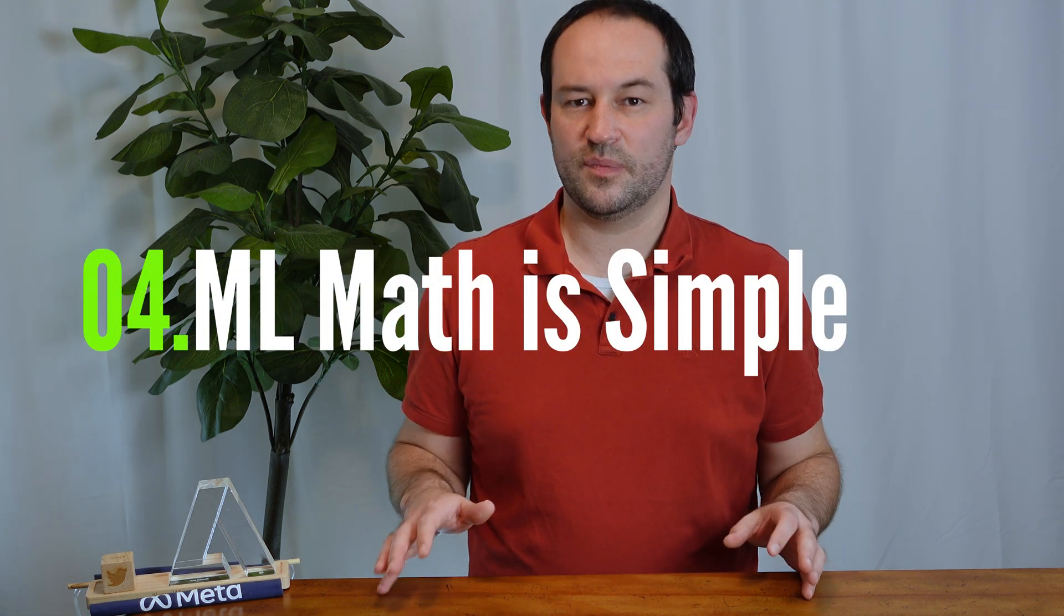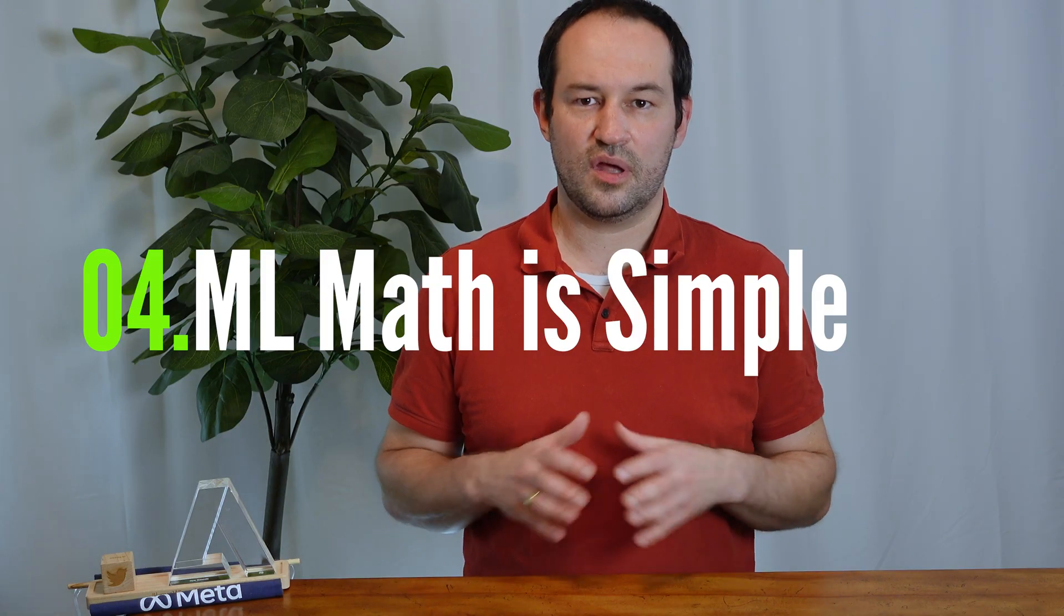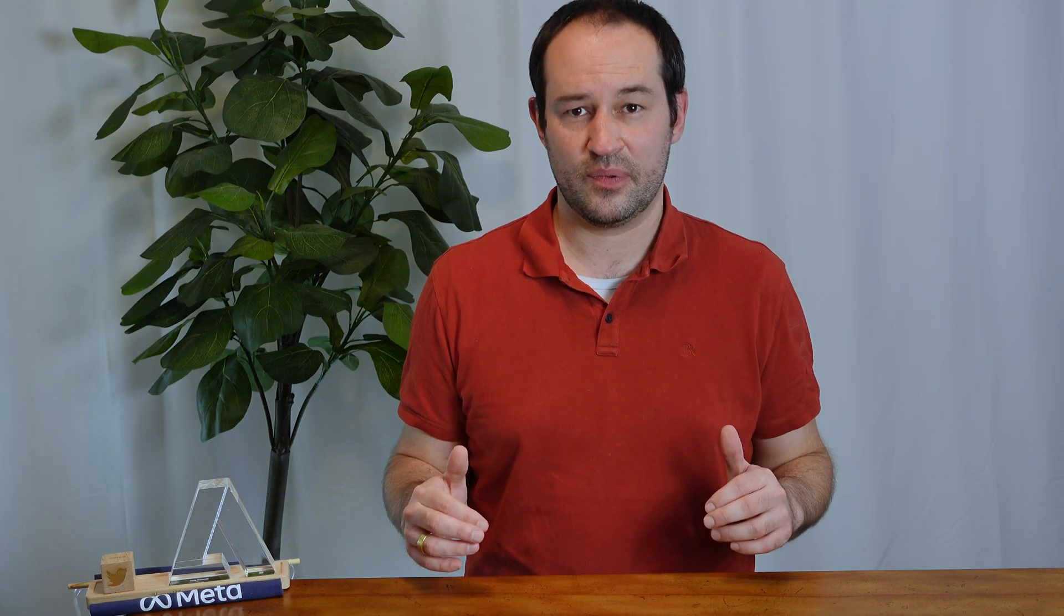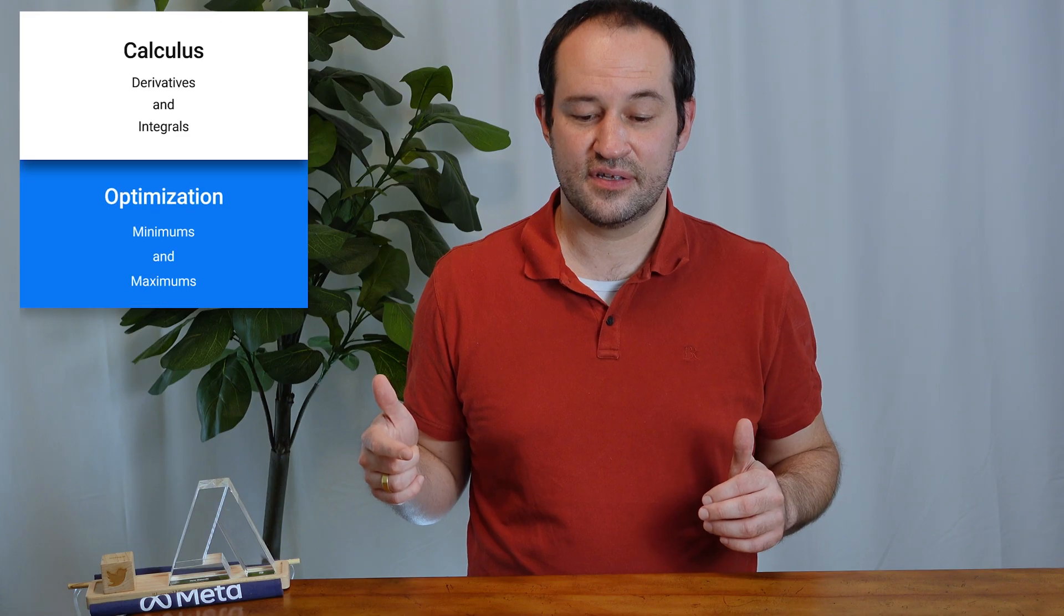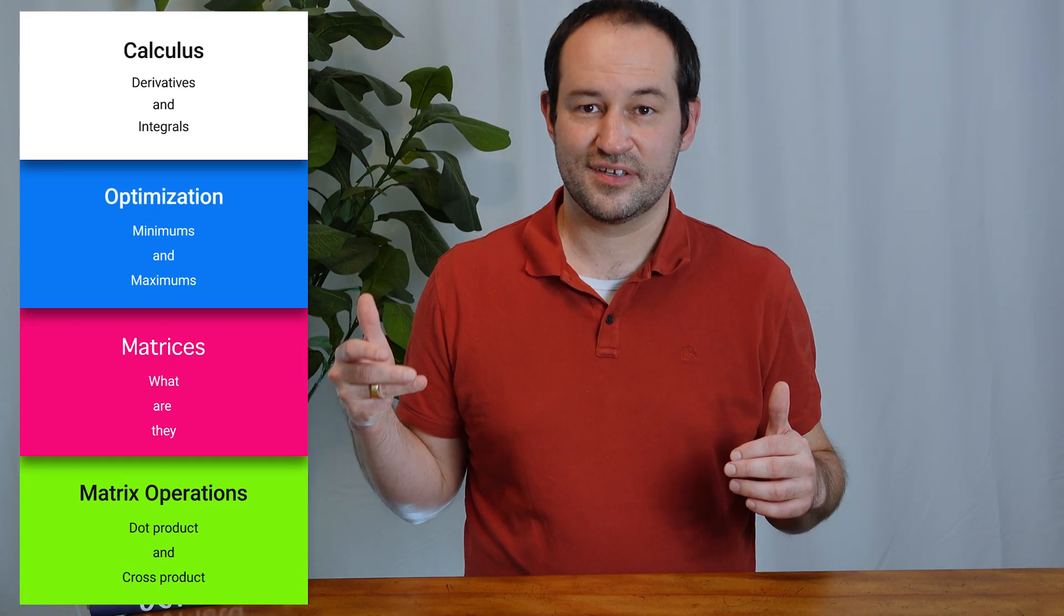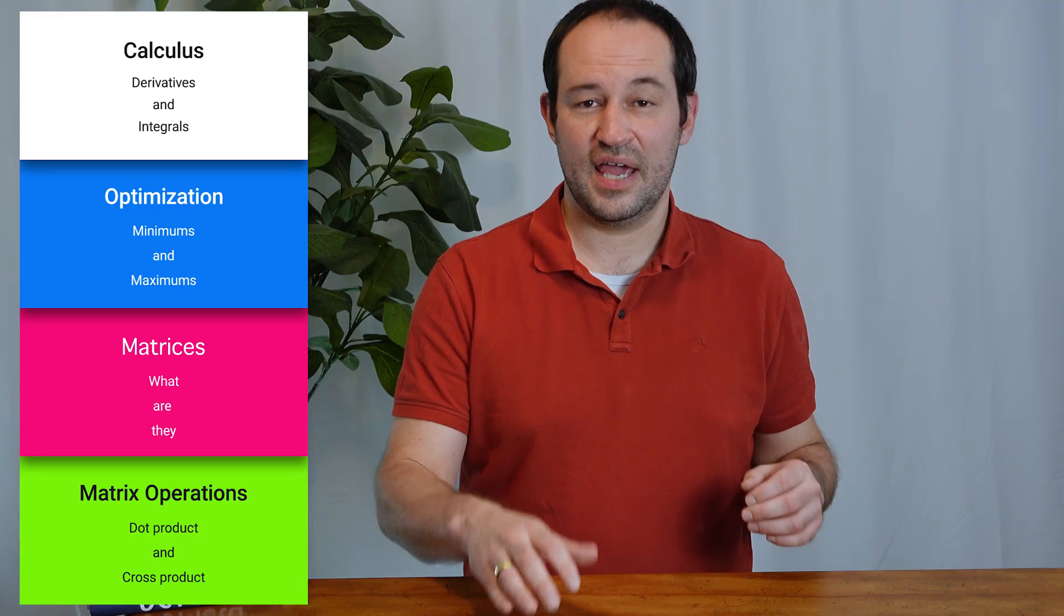Also, don't worry too much about mathematics. People often freak out about it, but here are the concepts that you really need to know in math in order to be fairly comfortable in machine learning. They're all pretty simple to pick up. Derivatives, integrals, optimizations, so finding mins and max, matrices, dot product, cross product. And if you don't understand any of the words that I just said, type them into ChatGPT. It'll teach you.